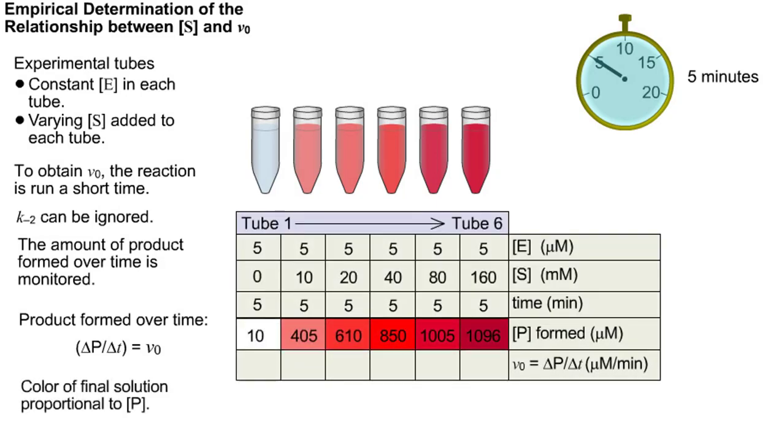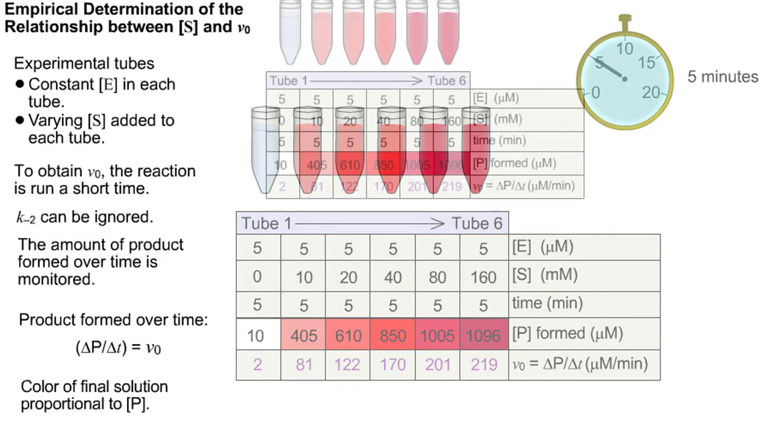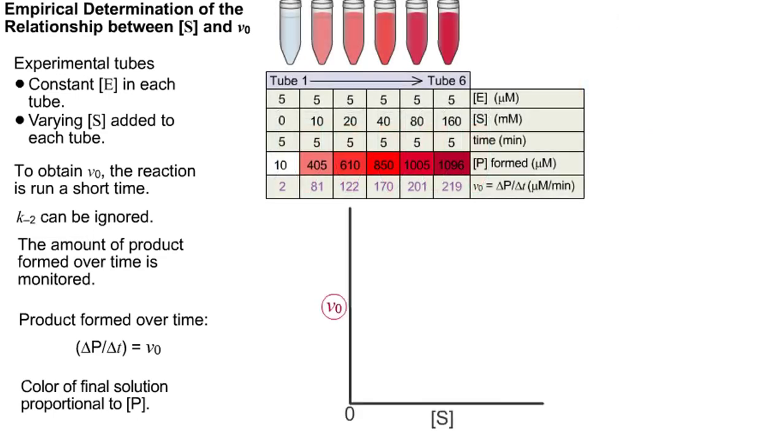Note that the tubes containing the most substrate yield the highest initial velocities. A plot of initial velocity versus substrate concentration yields a hyperbolic curve consistent with the Michaelis-Menten model of enzyme activity.